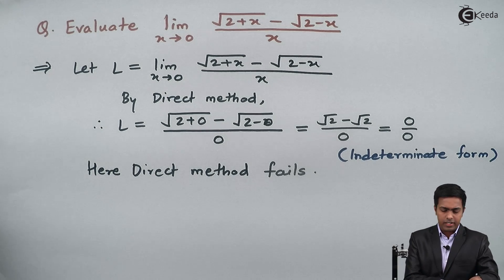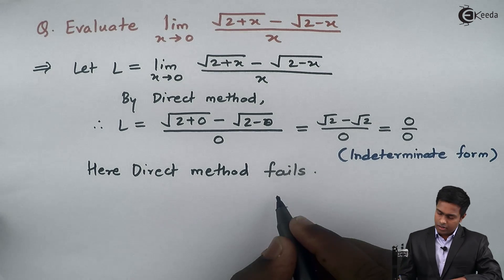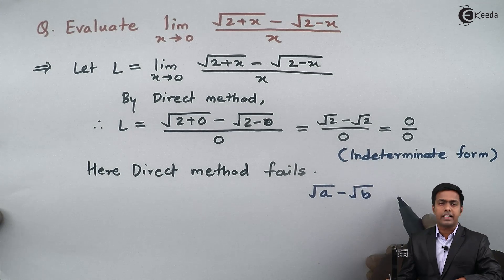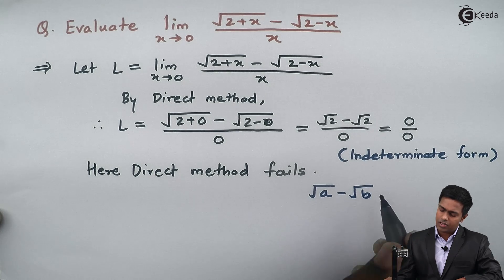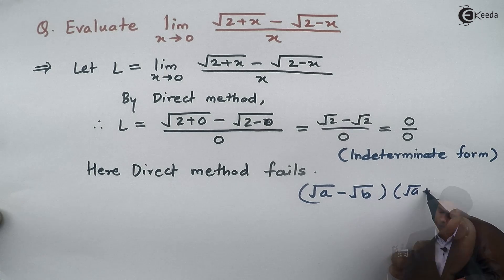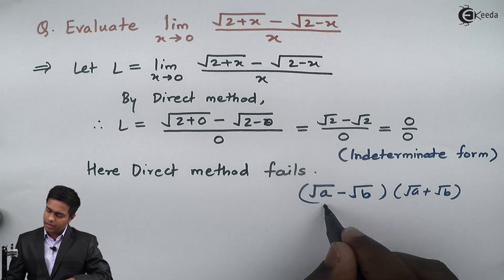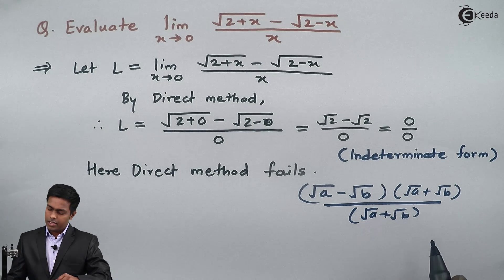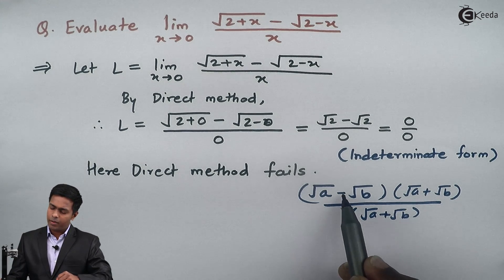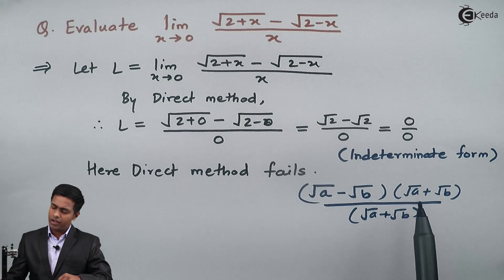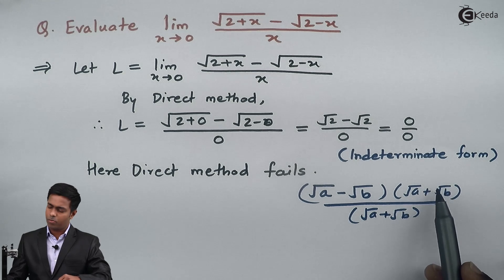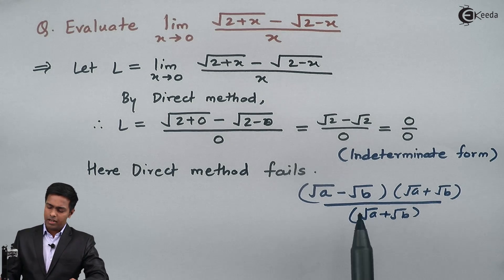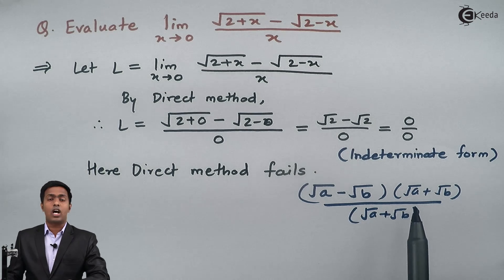To understand rationalization: whenever we have root of a minus root of b, we multiply by root of a plus root of b in both the numerator and denominator. Similarly, if we have root of a plus root of b, we multiply by root of a minus root of b in numerator and denominator. In other words, in rationalization you multiply by the term with the opposite sign.